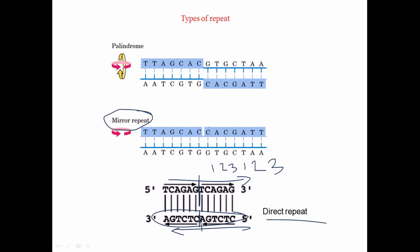What is a mirror repeat? As the name suggests, if we consider a mirror at this particular plane, you can find the sequence TTAGCAC on the left-hand side, and if you put a mirror, the mirror image you find on the opposite side is CACGATT. The same thing can happen on the opposite side because all these double strands are formed using the complementary nature of the DNA.